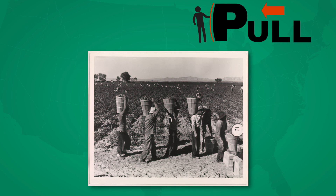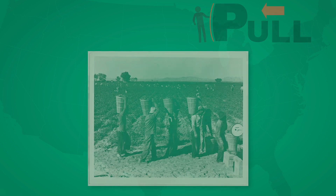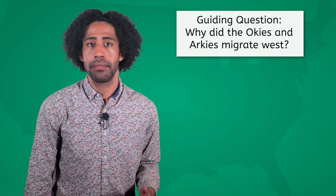Meanwhile, California presented a beacon of hope, offering pull factors that made the westward journey seem worthwhile. The state's thriving agricultural industry offered job opportunities in farming that were scarce back home. The prospect of farming in California's fertile valleys offered a chance for the Okies and Arkies to rebuild their lives and secure a future for their families. Let's pause and reflect: Why did the Okies and Arkies migrate west?